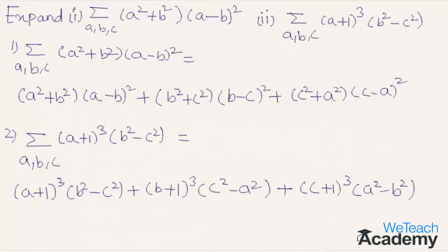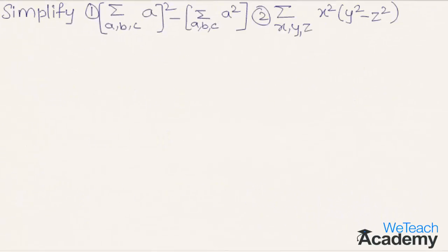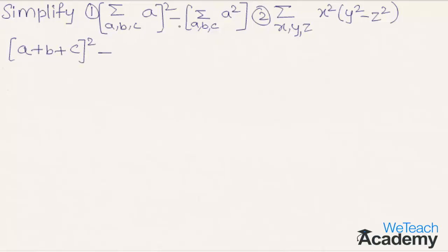Now let us proceed and solve another example. Simplify sigma(a, b, c)[a]² minus sigma(a, b, c)[a²]. The second example is sigma(x, y, z) of x²(y² - z²). For the first one, expanding the first term gives (a + b + c)² and expanding the second term gives a² + b² + c².